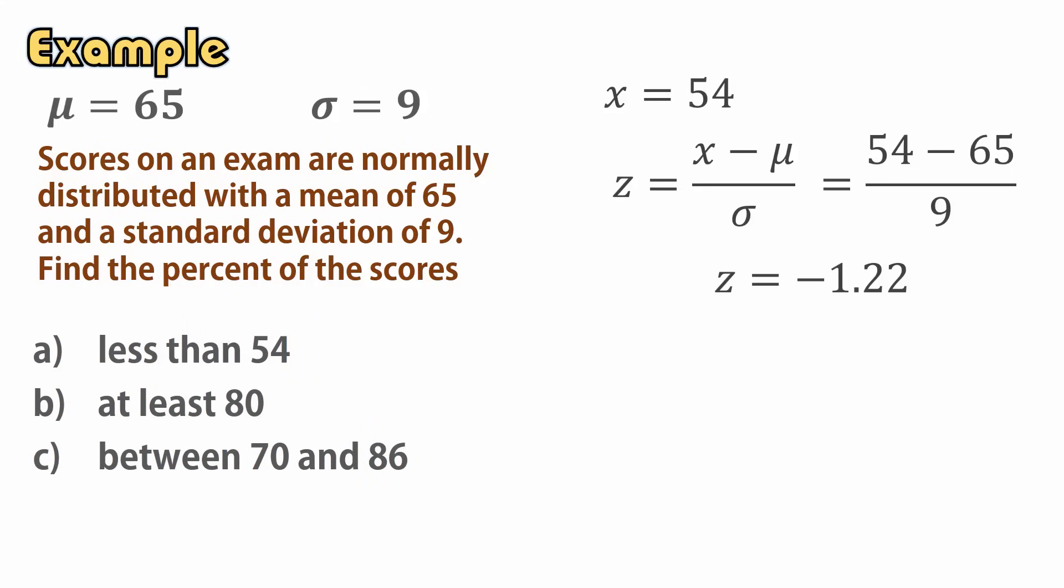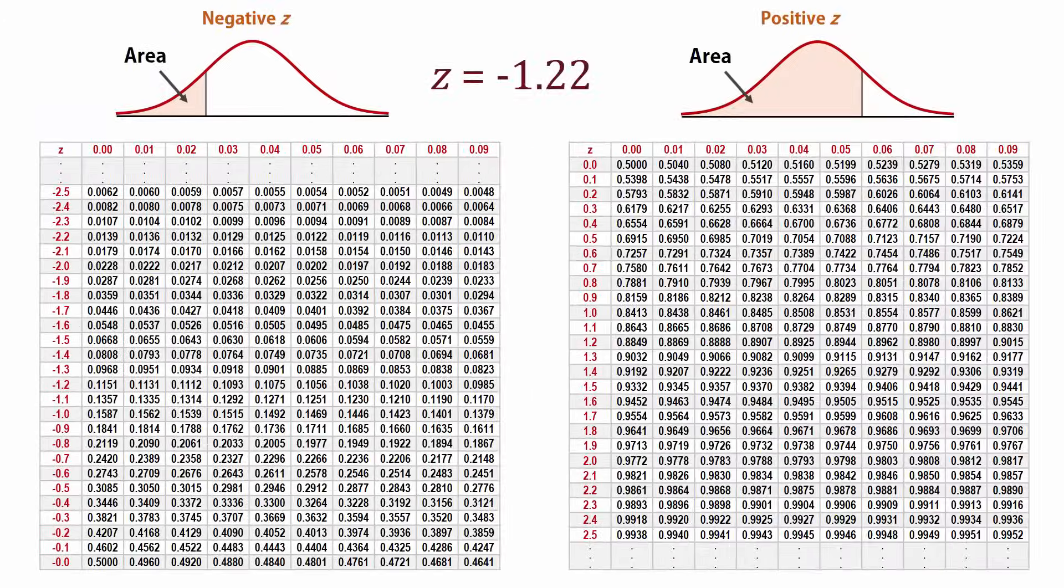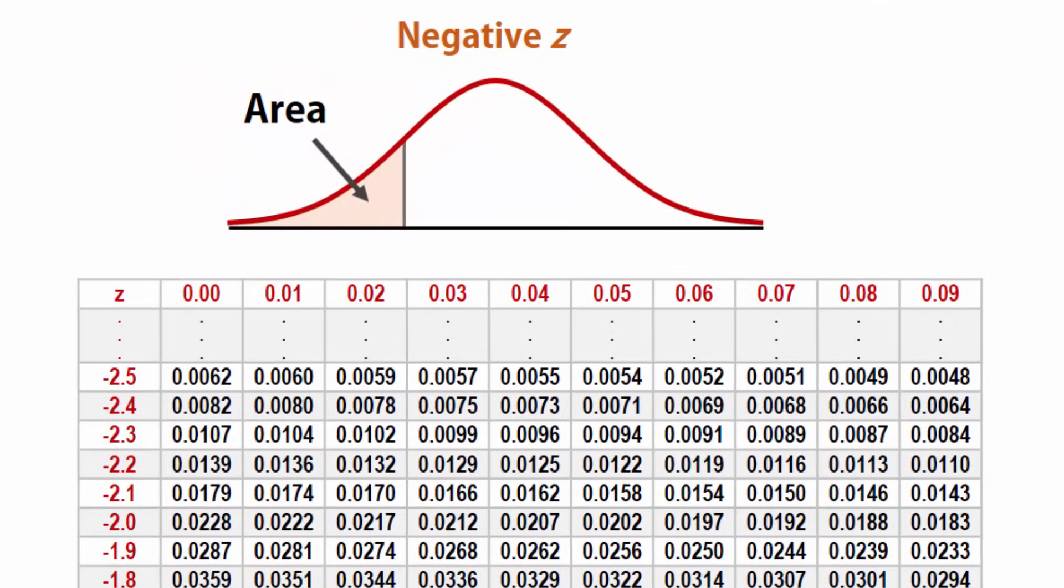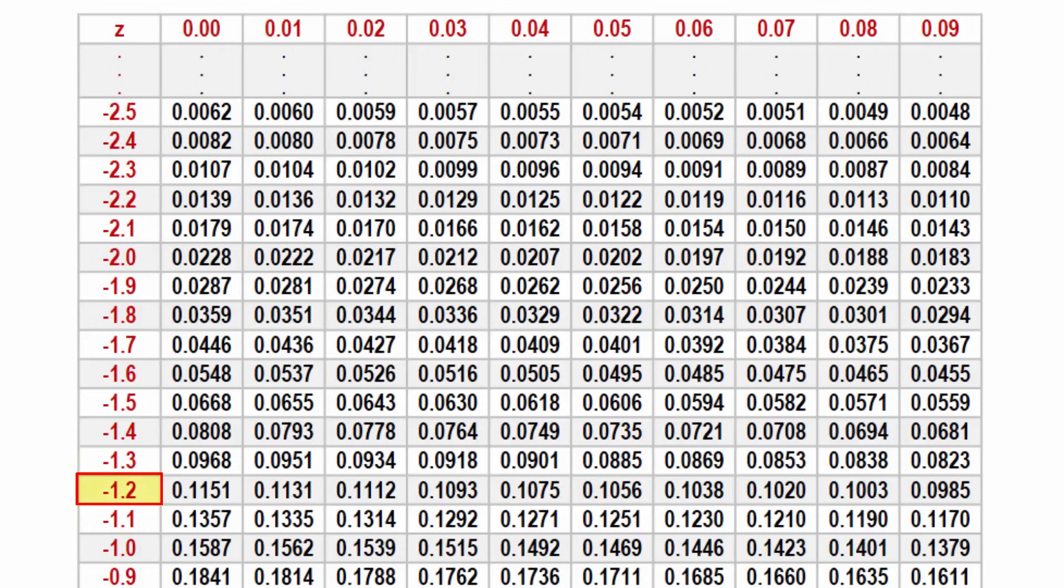We then go to the z-table and look up the area. For z equals negative 1.22, we go to the negative side of the table. Look for negative 1.2 in the first column and 0.02 at the top. The corresponding area here is 0.1112.